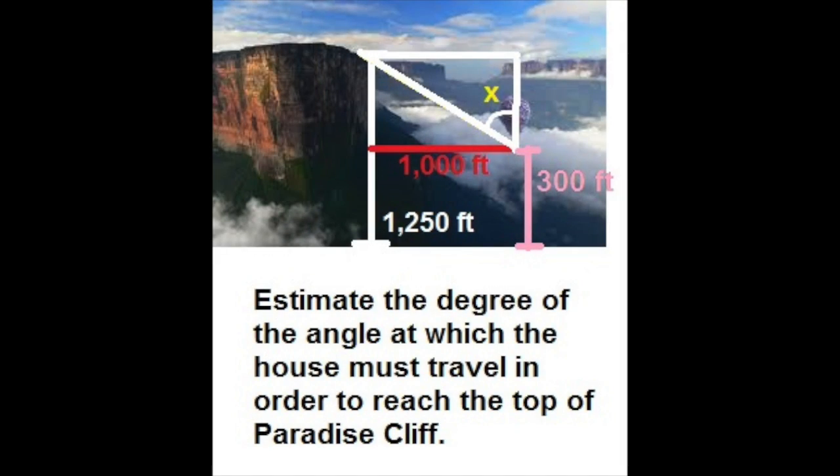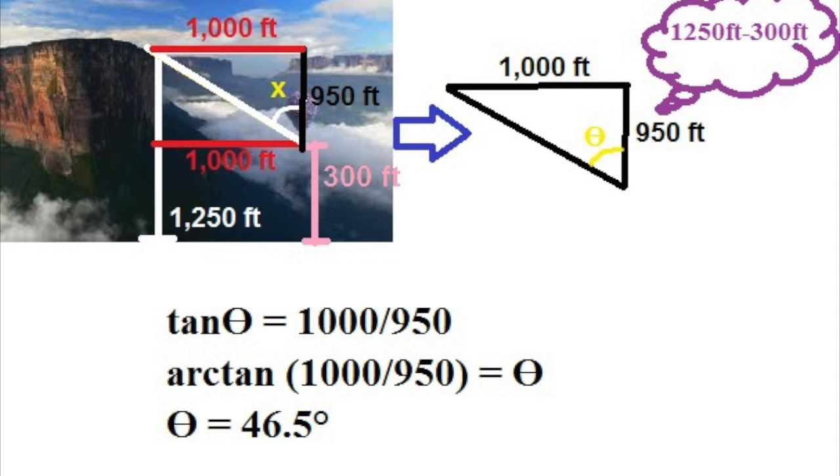In the movie Up, when the house is on its way to Paradise Falls, estimate the degree of the angle at which the house must travel in order to reach the top of Paradise Cliff. Given that the cliff is 1250 feet tall, the house is 300 feet off the ground, and the distance from the cliff to the house is 1000 feet. First, you will subtract 300 feet from 1250 feet to get 950 feet left to travel up. Your new triangle will look like the triangle on the right.